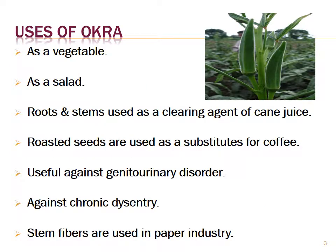Uses of okra: it is used as a vegetable and as a salad. Roots and stems are used as a cleaning agent of cane juice. Roasted seeds are used as a substitute for coffee. It is useful against genitourinary disorders and chronic dysentery. Stem fibers are used in the paper industry.